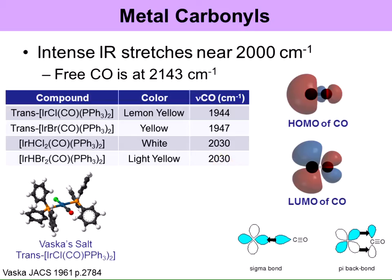For the iridium complexes with +3 oxidation state, the iridium is less electron-dense, so you have less pi back-bonding taking place. You have less donation into the anti-bonding orbital, so the CO stretching frequency is shifted less for Ir(III) than for Ir(I), because the +1 is more electron-rich and has more pi back-donation occurring.